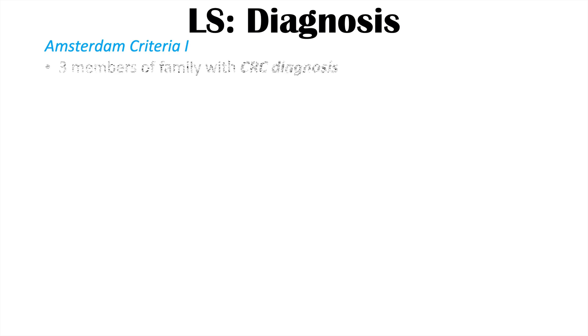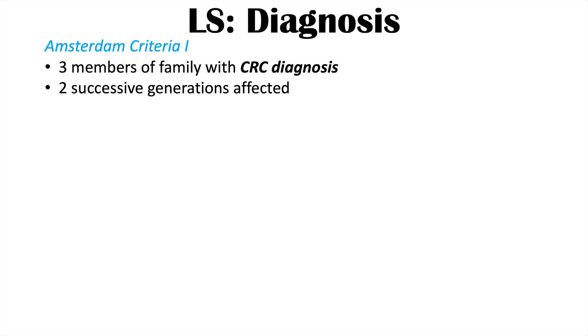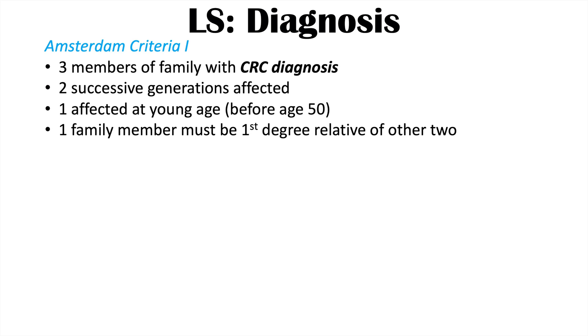Clinicians use sets of criteria to help diagnose Lynch syndrome or identify patients requiring further investigation. The Amsterdam criteria 1 involves three family members with a definitive colorectal cancer diagnosis, across two successive generations, with one patient affected before age 50, and one family member being a first-degree relative of the other two. Familial adenomatous polyposis must also be excluded.